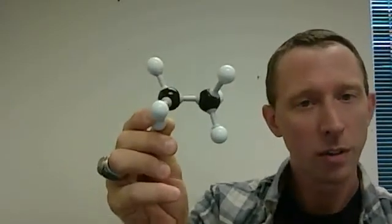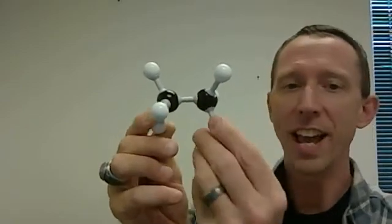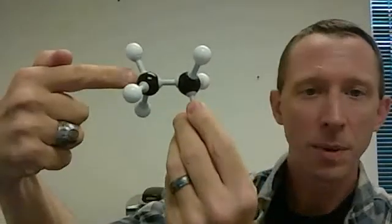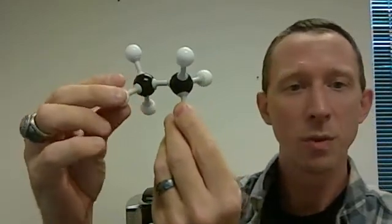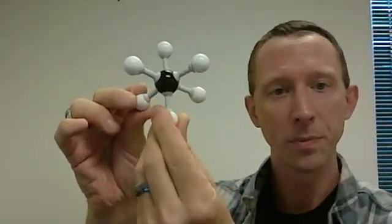Enter a guy named Melvin Spencer Newman. Now, Newman's idea was, don't look at the molecule in this orientation, down the edge of the bond. Instead, sight down the carbon-carbon bond this way. In other words, rotate the molecule by 90 degrees.